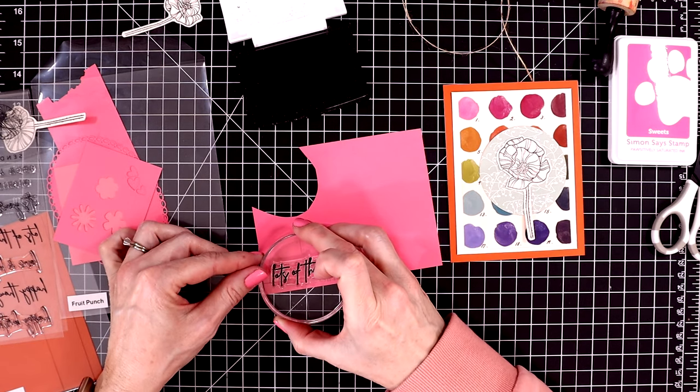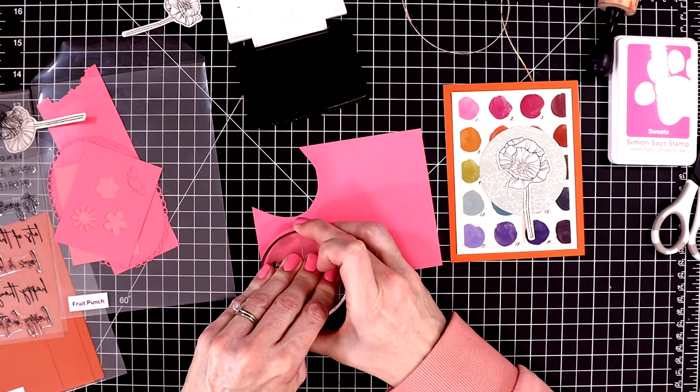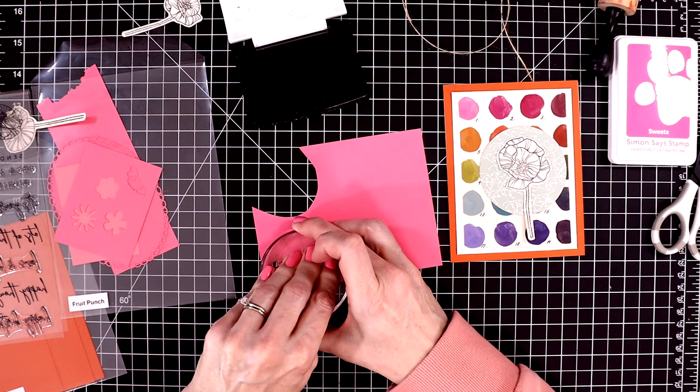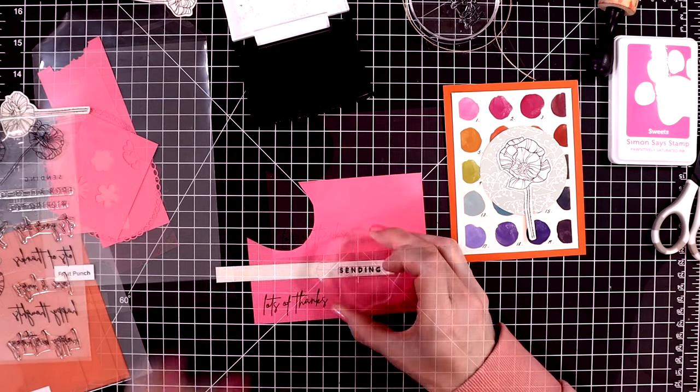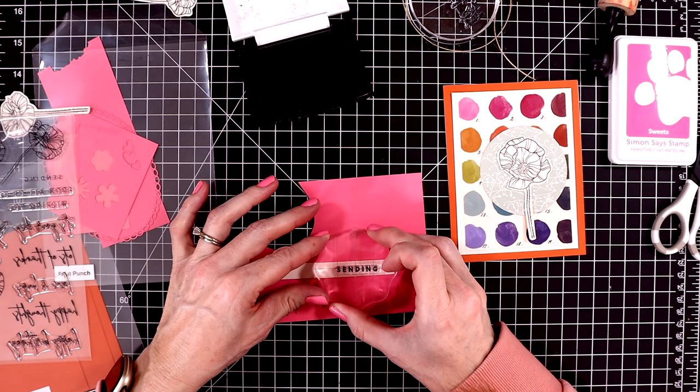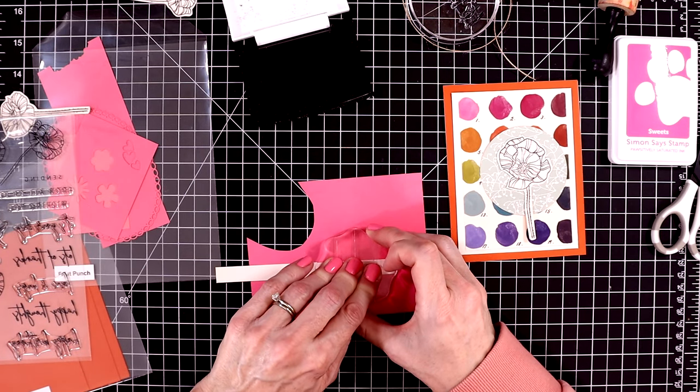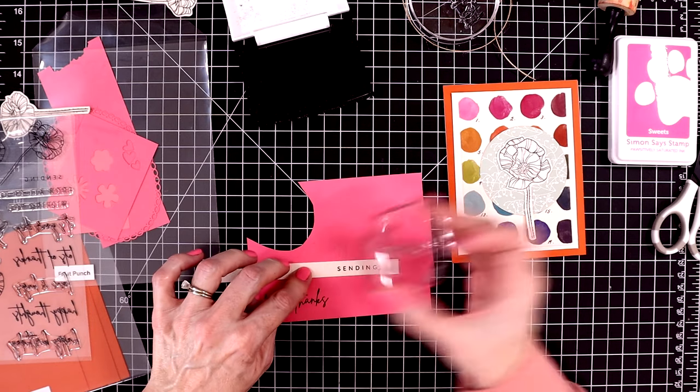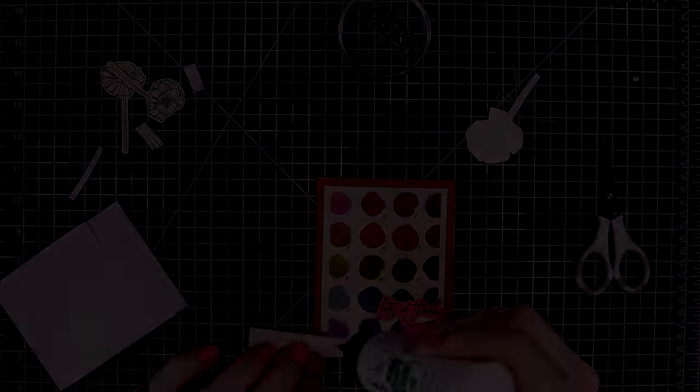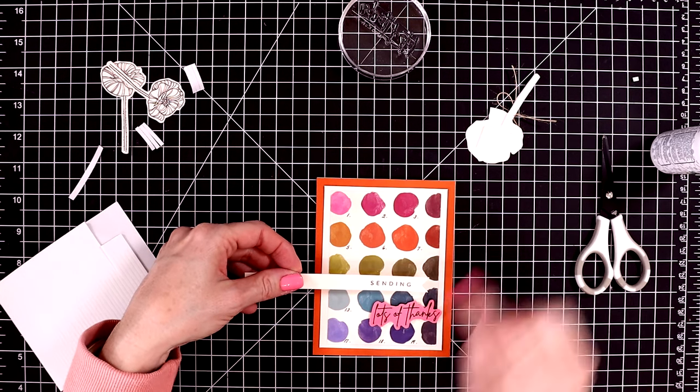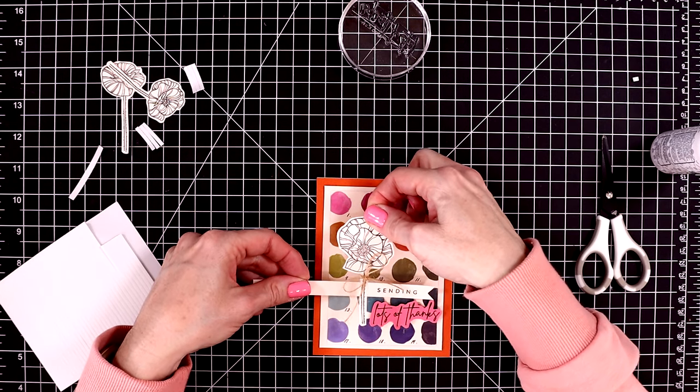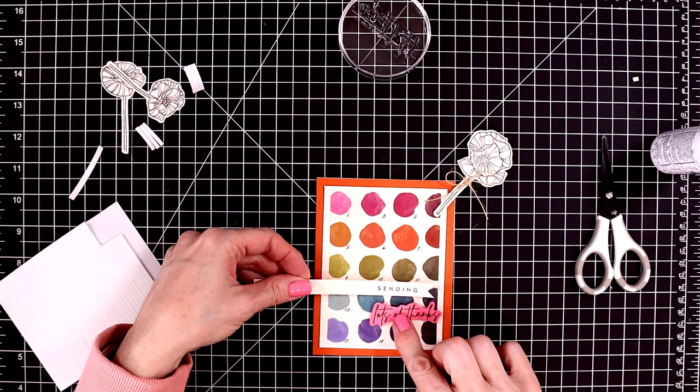The sentiment, I'm going to stamp out on a piece of Fruit Punch cardstock. All of my cardstock, or I should say most of my cardstock, comes from Spellbinders. I love their gorgeous cardstocks. They're nice, heavyweight cardstocks. And then on a piece of Barely Peach cardstock, I'm stamping out another sentiment that says sending. And this is going to say, sending lots of thanks.